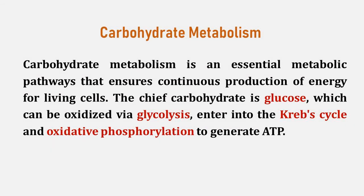Glucose is the body's most readily available source of energy. After digestive processes break carbohydrates into monosaccharides including glucose, the monosaccharides are transported across the wall of the small intestine and into the circulatory system, which transports them to the liver. In the liver, hepatocytes either pass the glucose on through the circulatory system or store excess glucose as glycogen.